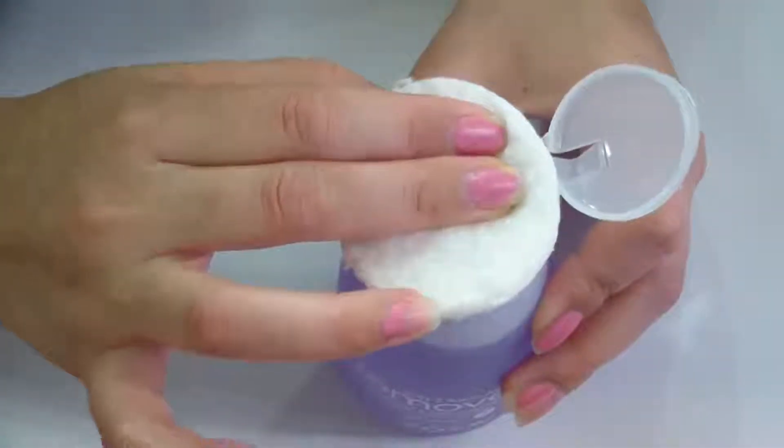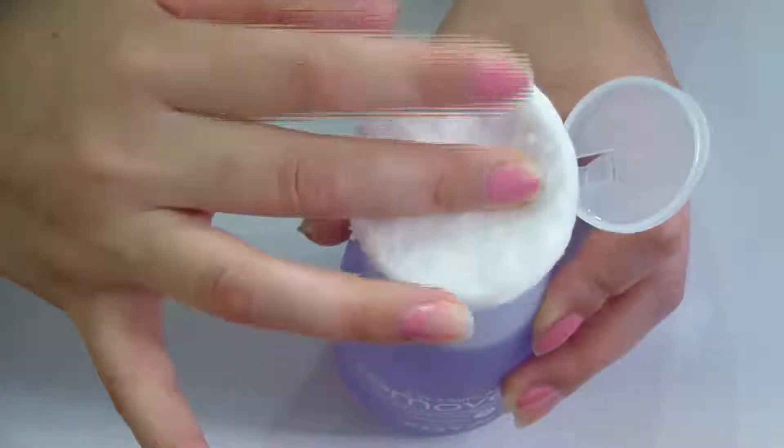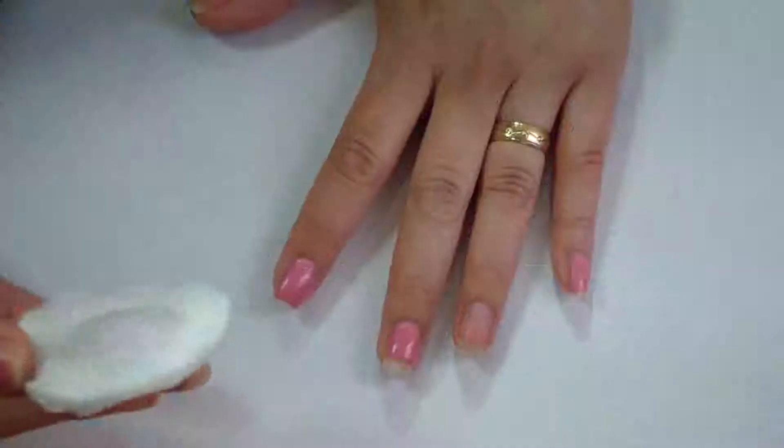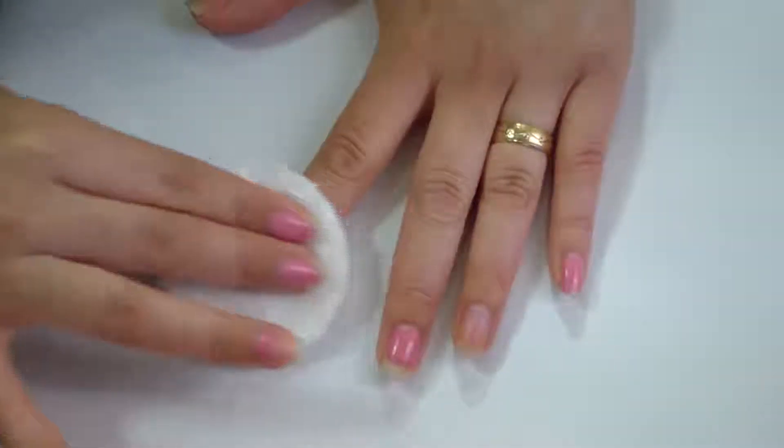You're just going to twist it and you're going to use a round cosmetic pad and then you're going to press on it about two times and you can use this to remove all of your old nail polish on all of your nails.